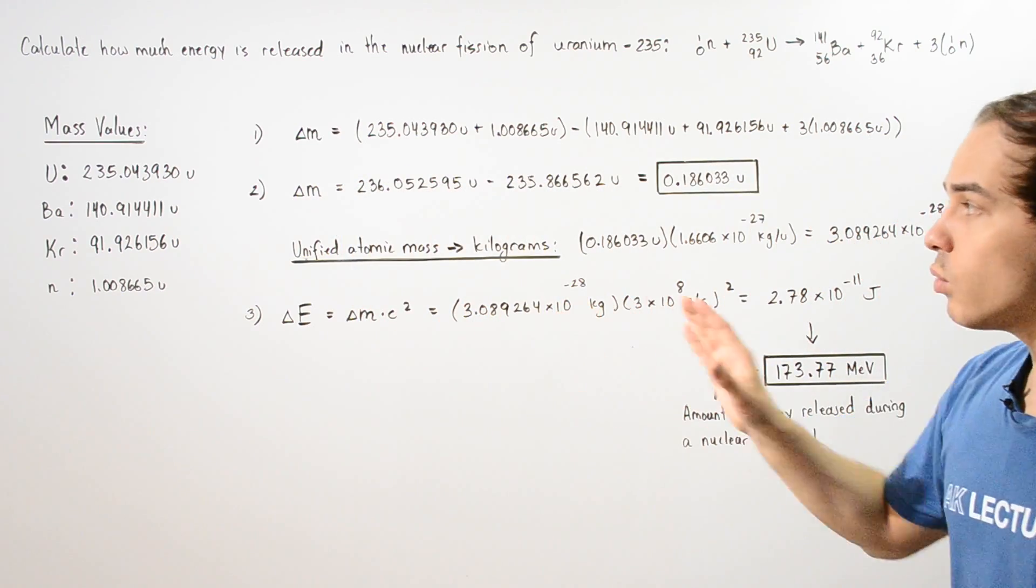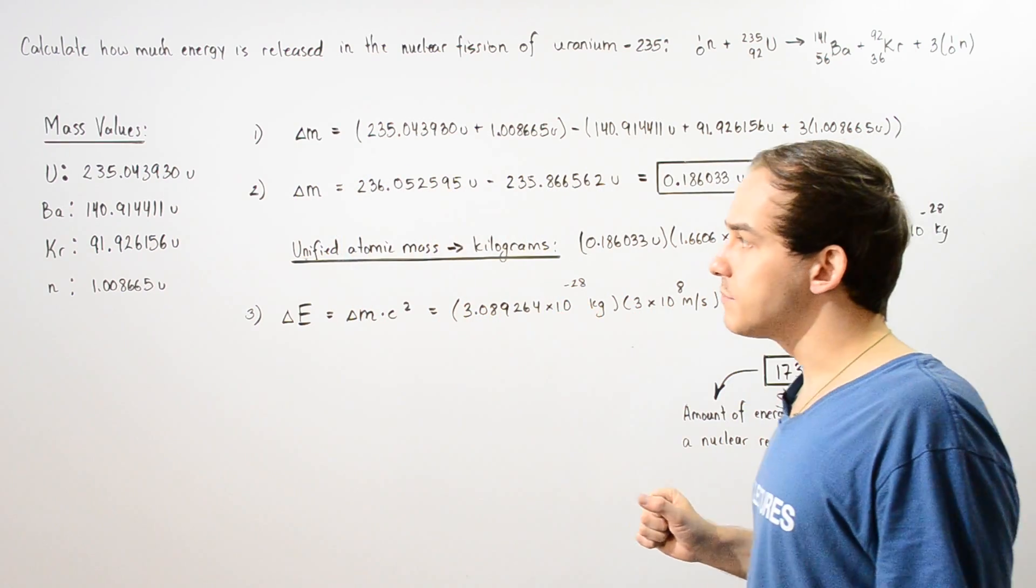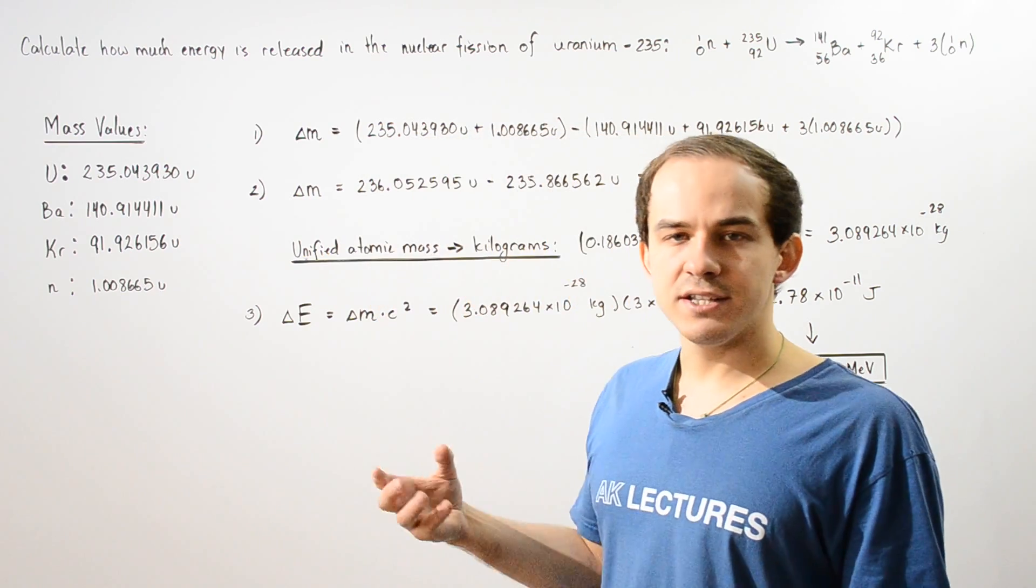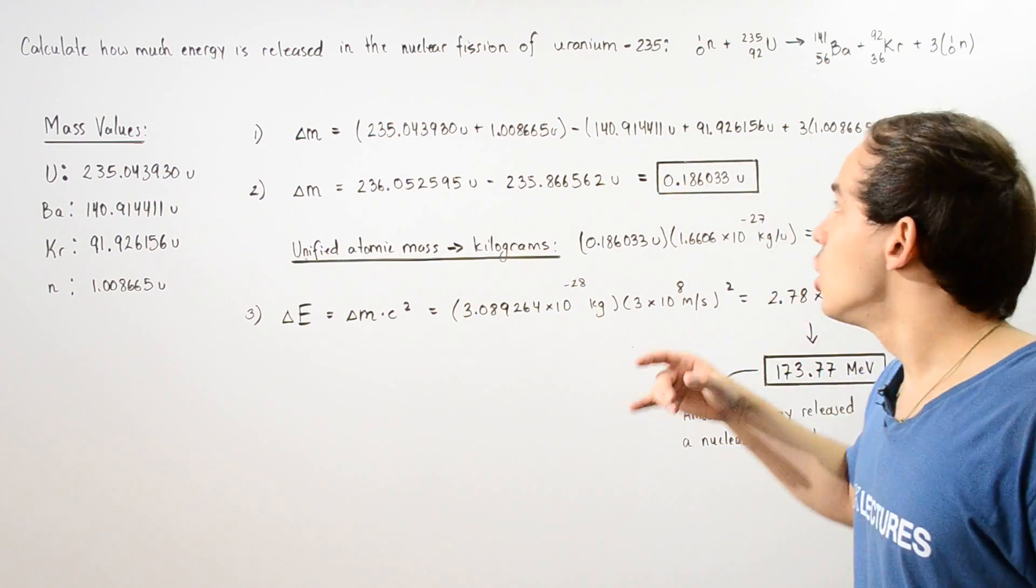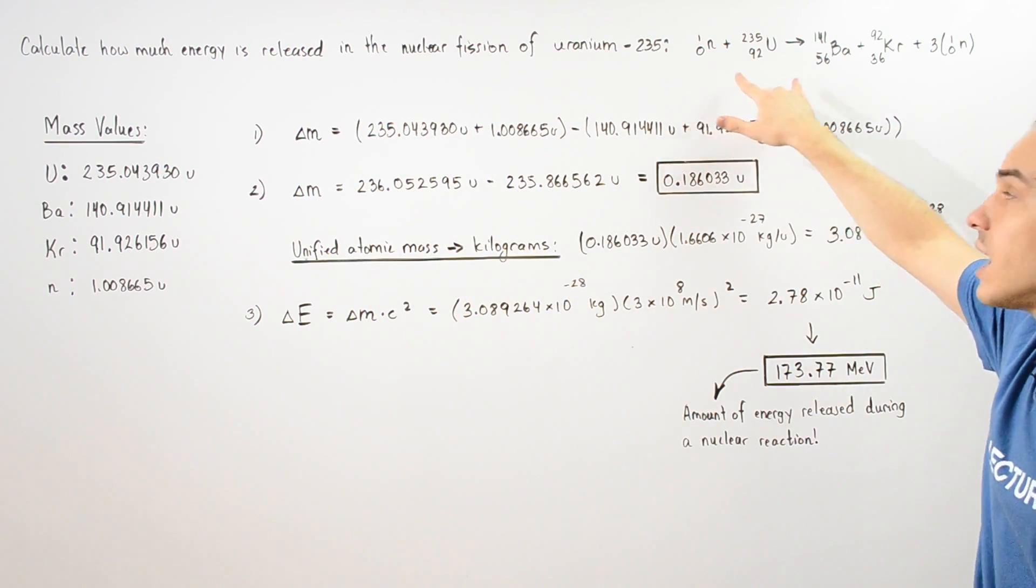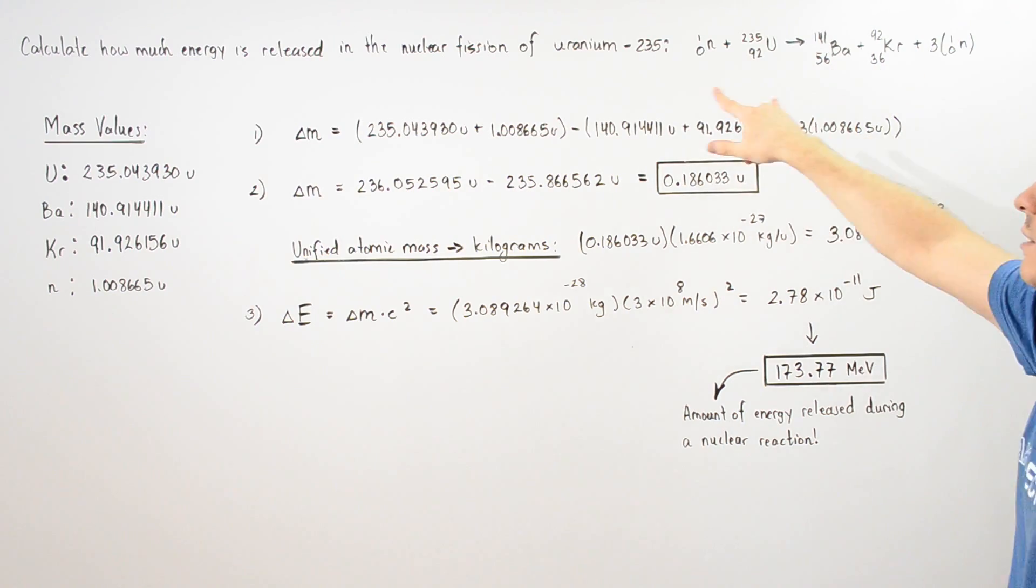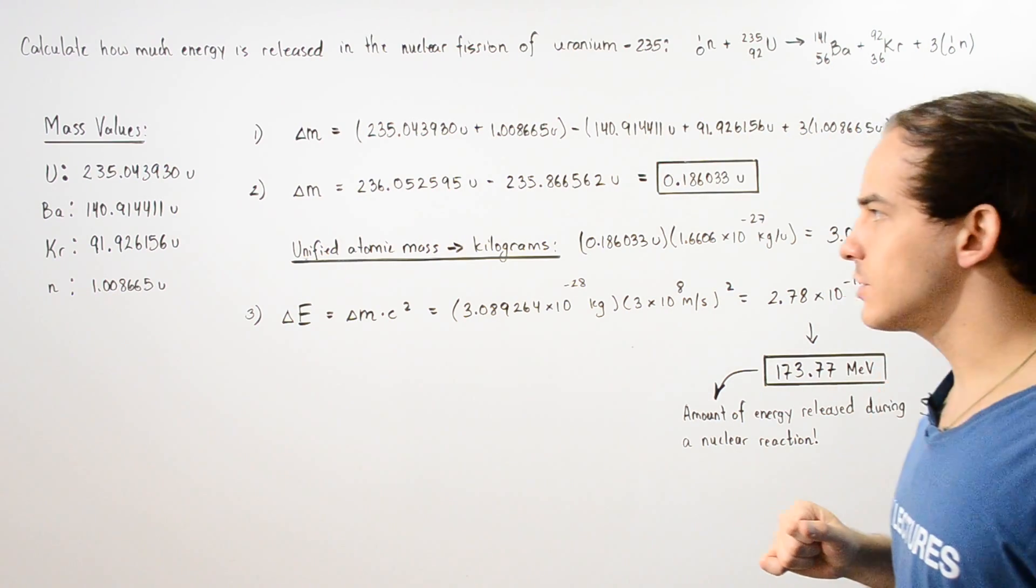So, the way we're going to approach this problem is by calculating the decrease in atomic mass when we go from the reactant side to the product side of our nuclear fission reaction.